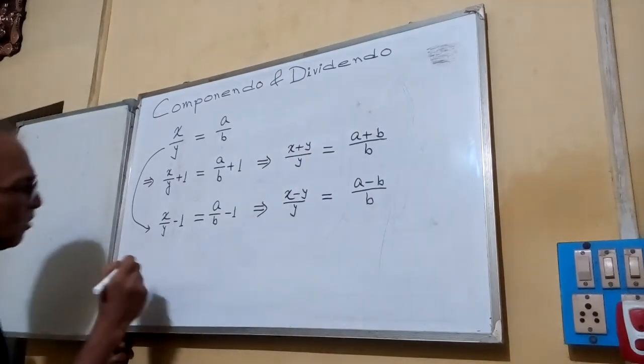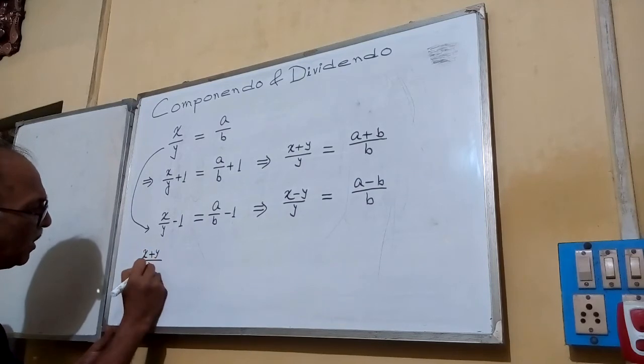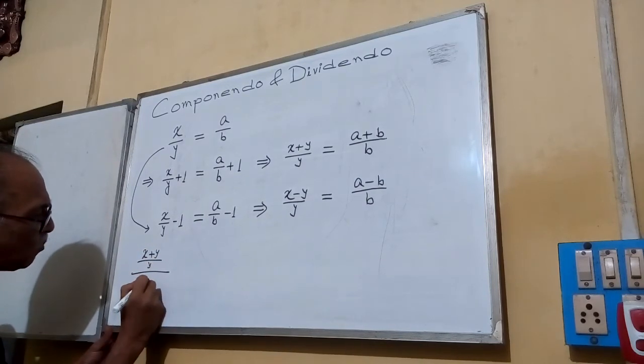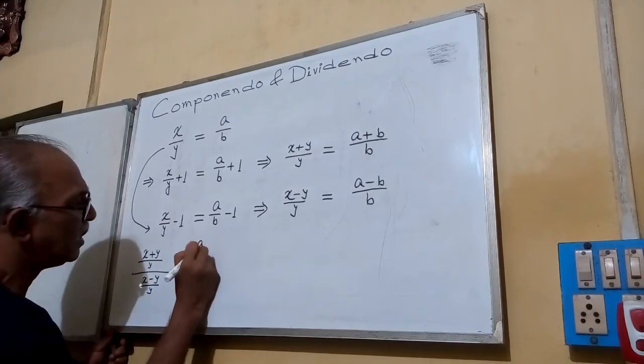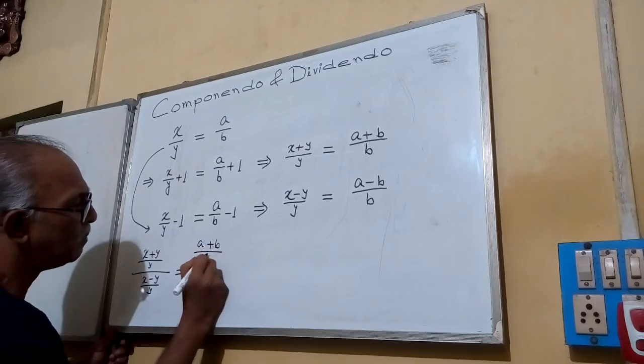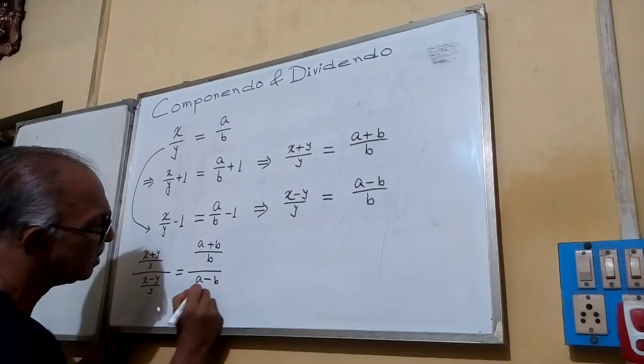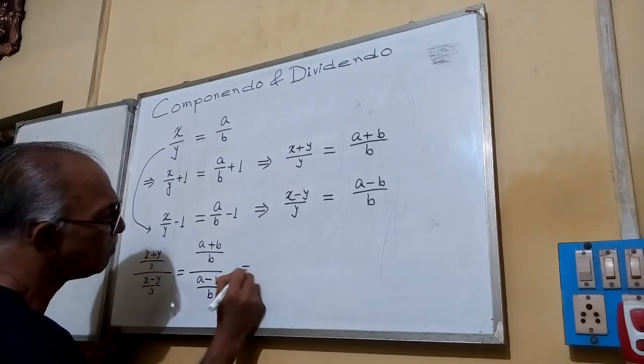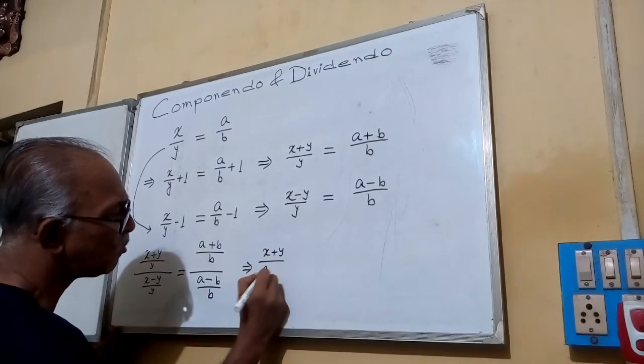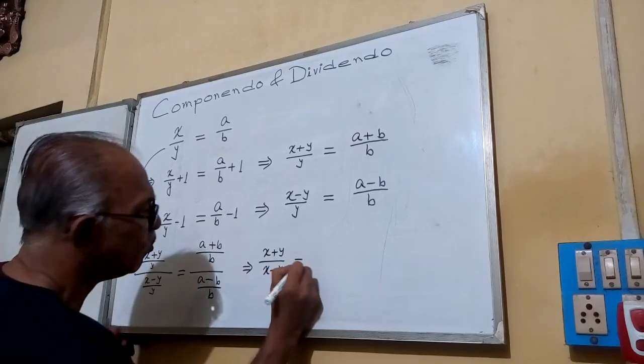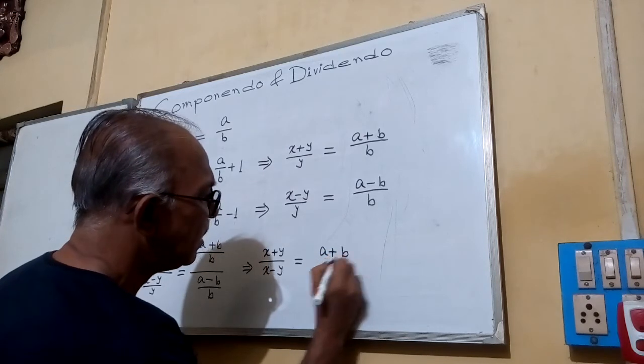Now, dividing these two relations, what we are getting? X plus Y by Y divided by X minus Y by Y equals A plus B by B divided by A minus B by B. This implies that X plus Y by X minus Y equals A plus B by A minus B.